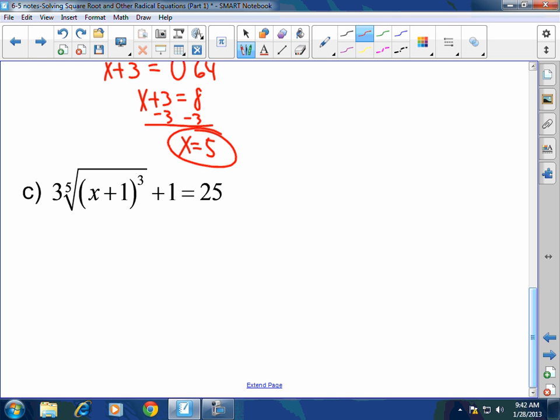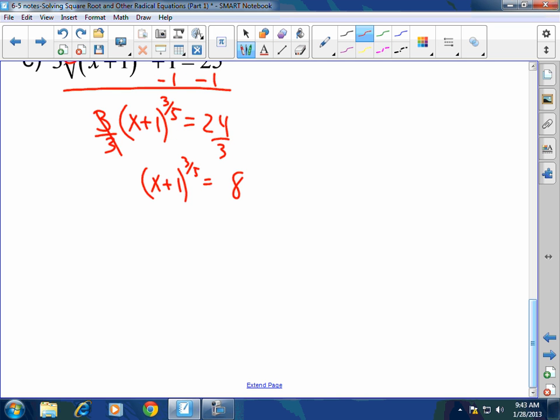They gave it to us in radical form. I'm going to go ahead and transform that into rational exponents. First things first, just like a two-step equation. You undo addition, subtraction first. Then, you undo multiplication, division. So I'm going to subtract 1 to both sides. So I got 3. I'm going to convert this already to a rational exponent. So this is the three-fifths. Remember, numerator, denominator. And that's going to equal 24. Divide by 3 to both sides.